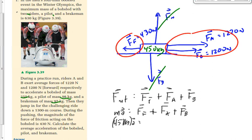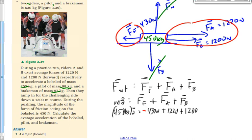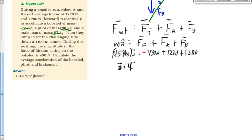The force of friction is negative 430 newtons, F-A is 1,220, and F-B is 1,200. Adding those up on the right-hand side and dividing by 450, we get 4.4 meters per second squared. It's a positive value, so the sled accelerates forward.